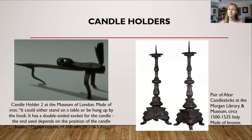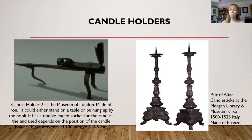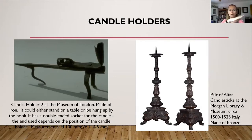Now that we've discussed rush lights and the poorest using them, if you were able to afford candles — either tallow candles or beeswax candles — then you would have needed candle holders. The candle holder on the left is at the Museum of London, made of iron. I found it fascinating because it could either stand on the table or be hung up by the hook, and it has a double-ended socket for the candle. If it sits on the table, there's a candle holder on the far right of the piece; if you hang it by the hook, there is another candle holder along the base to hold a candle vertically.